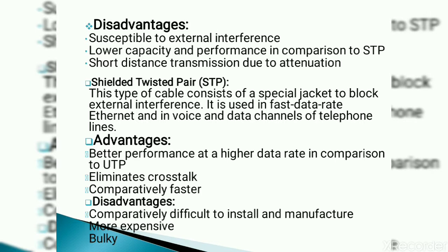Shielded twisted pair (STP) cables consist of an extra jacket to block interference — whether atmospheric or data noise. That extra jacket is made up of plastic or insulating material and is fixed around the wire. Examples include Ethernet and data channels for telephone lines. Advantages: better performance at higher data rates compared to UTP, eliminates crosstalk, comparatively faster. Disadvantages: comparatively difficult to install, more expensive, and heavier.